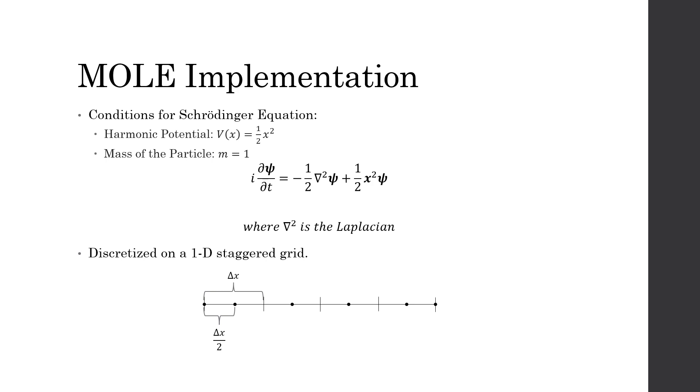To solve the Schrödinger equation using mimetic methods, I have a couple conditions that I want to implement in MOLE. The first condition is that my time independent harmonic potential V(x) equals one half x squared. The second condition is that the mass of the particle m equals one.